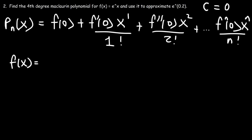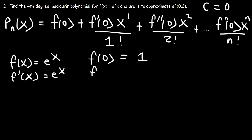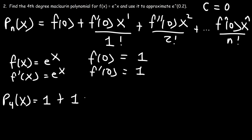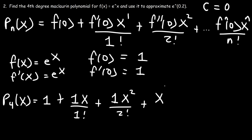For f(x) = e^x, every derivative is also e^x, so all derivatives evaluated at 0 give e⁰ = 1. So f(0) = 1, f'(0) = 1, f''(0) = 1, f'''(0) = 1, and so on. Writing out the fourth degree polynomial: 1 + 1·x/1! + 1·x²/2! + 1·x³/3! + 1·x⁴/4!, and we stop at the fourth term.